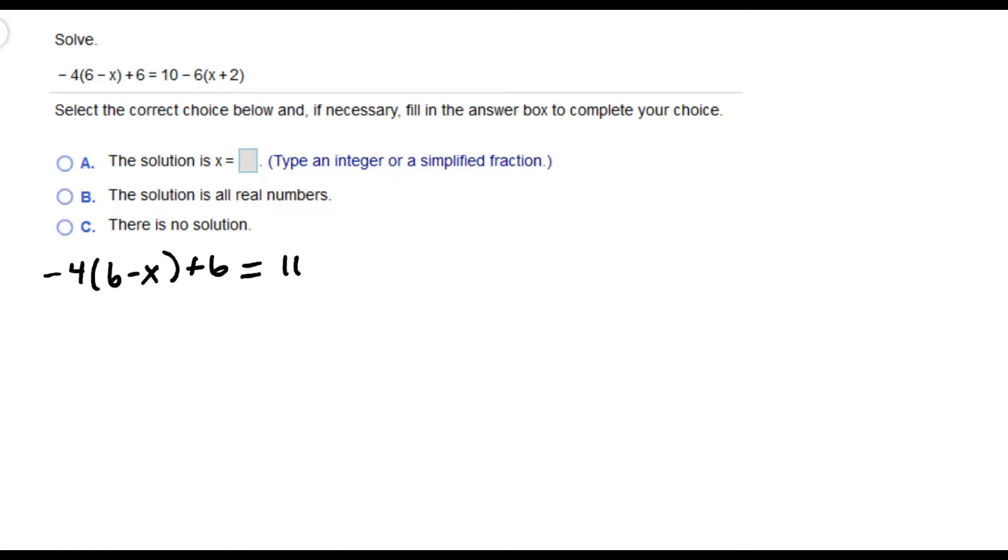On the left, I'm going to use the distributive property and distribute negative 4 to each term inside the parentheses. That gives me negative 24 plus 4x, and I'm going to carry down the plus 6.